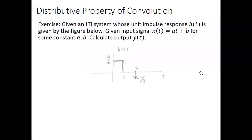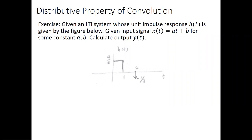Let's start our lecture today. Last lecture we looked at more examples about discrete time and continuous time conversion. One exercise we did not cover is the application of the distributive property of convolution. In this example, we have an input signal x(t) which is a linear signal at+b, and we have an LTI system whose unit impulse response h(t) looks like the figure, and we need to calculate the output y(t). As we know, y(t) is the convolution of x and h.